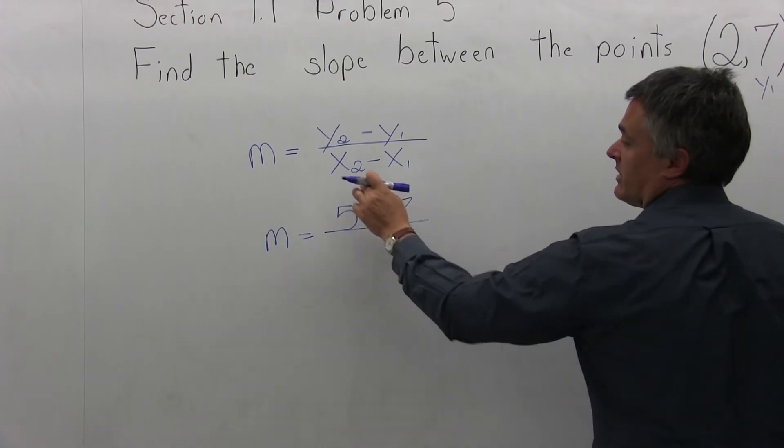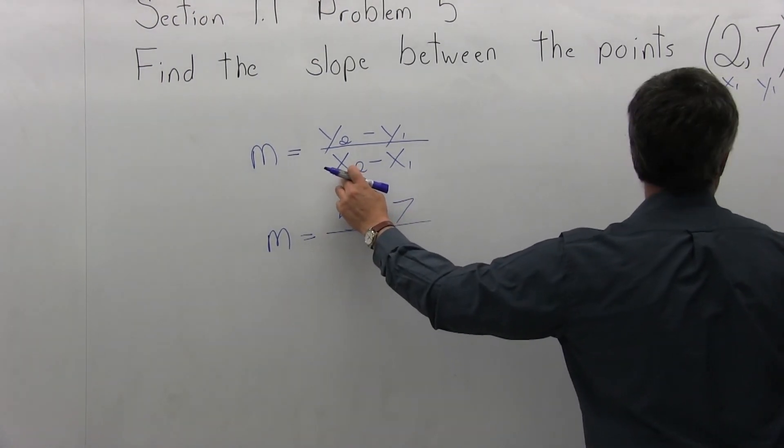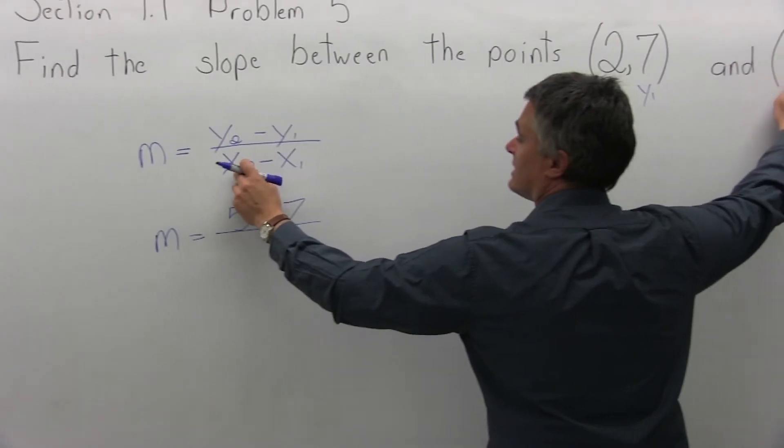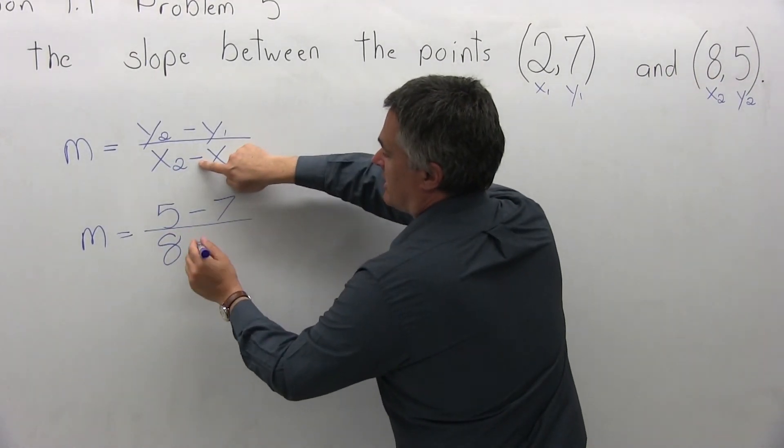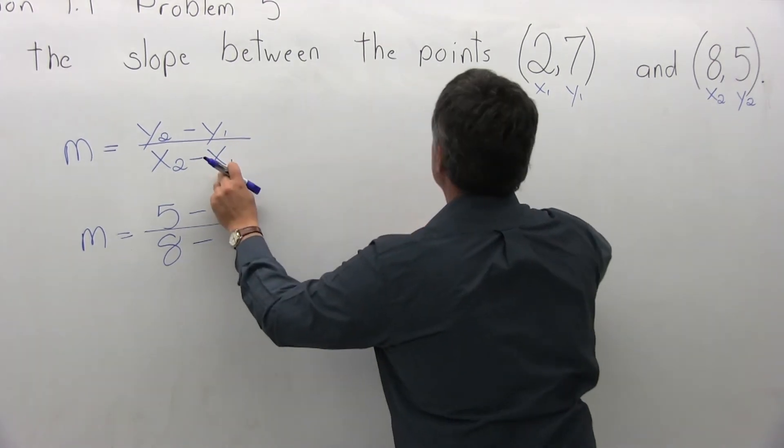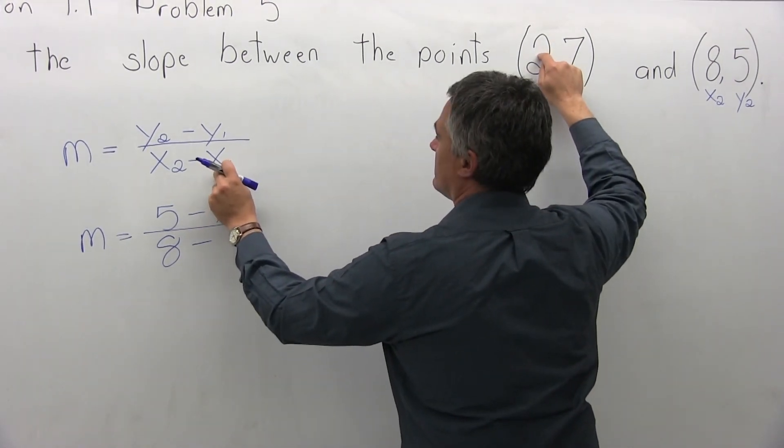Underneath in the denominator, x2 I have labeled as 8, it is x2. Then minus, because that's part of the formula. x1 is 2.